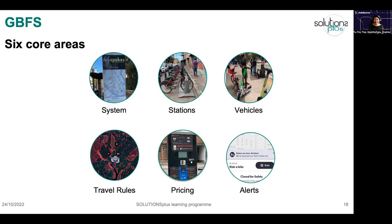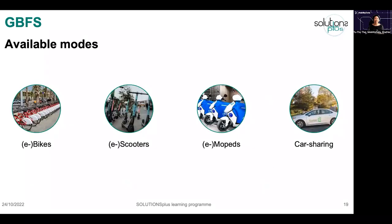For shared mobility you have GBFS, which has six core areas: the description of the system, stations — which can be virtual or physical — vehicles such as scooters or bikes, travel rules, pricing, and alerts on the system. GBFS covers four types of modes: bikes, scooters, mopeds, and car sharing — regardless of whether they are human-propelled, fuel-propelled, or electric.